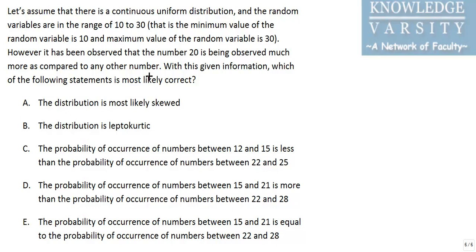The problem relates to continuous uniform distribution and there are lots of data given. There is a continuous uniform distribution where the random variables are in the range of 10 to 30. So, what is a continuous uniform distribution?